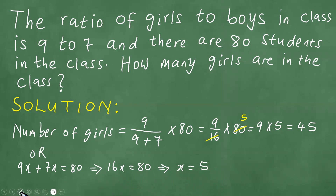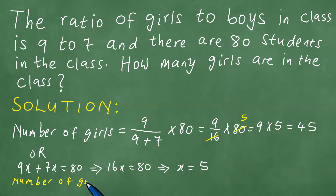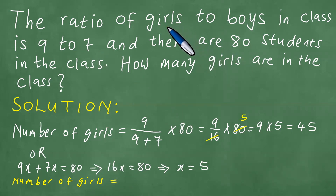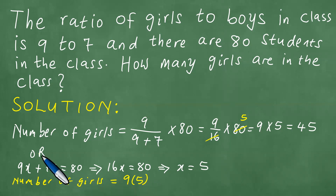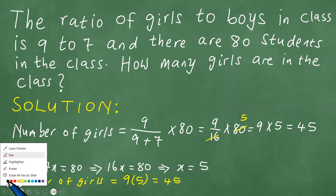Since the ratio of girls to boys is 9 to 7 and x is 5, the number of girls is therefore 9 by 5, which is 45. So the number of girls is 45.